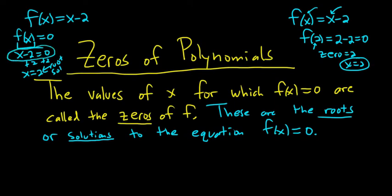So zeros, roots, solutions, they're all pretty much the same thing. It's just when you think of it as a function, you call it a zero. When you think of it as an equation, you call it a root or a solution. So context kind of dictates what it's called.